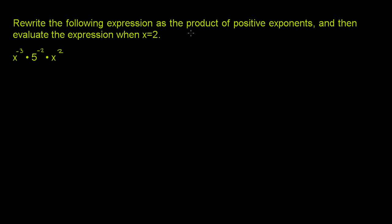Rewrite the following expression as the product of positive exponents and then evaluate the expression when x is equal to 2. They want us to rewrite it as the product of positive exponents, so they don't like the fact that we have this negative third power and the 5 to the negative second power.